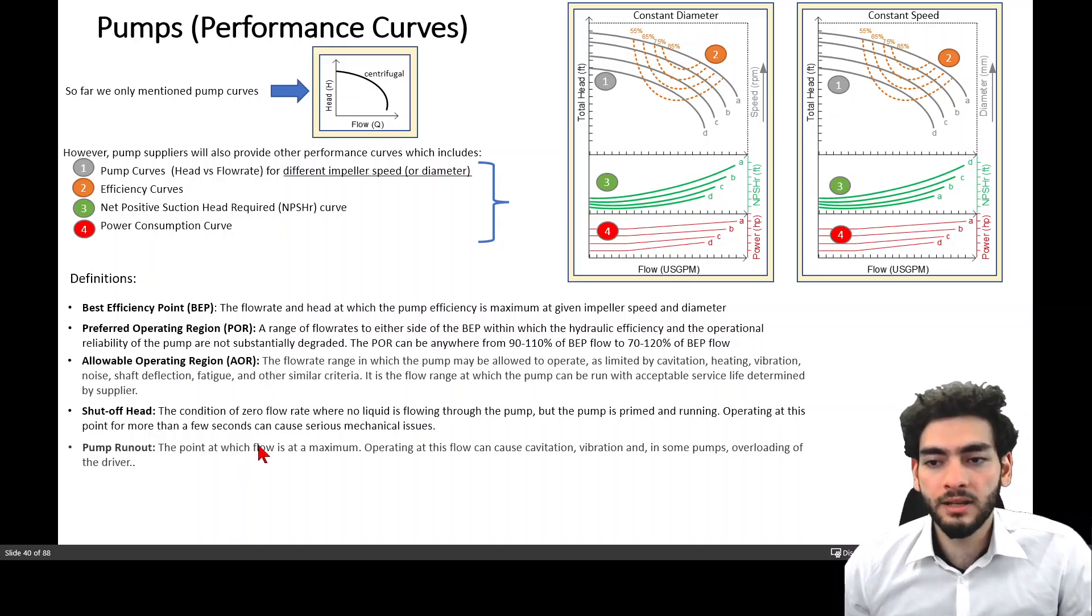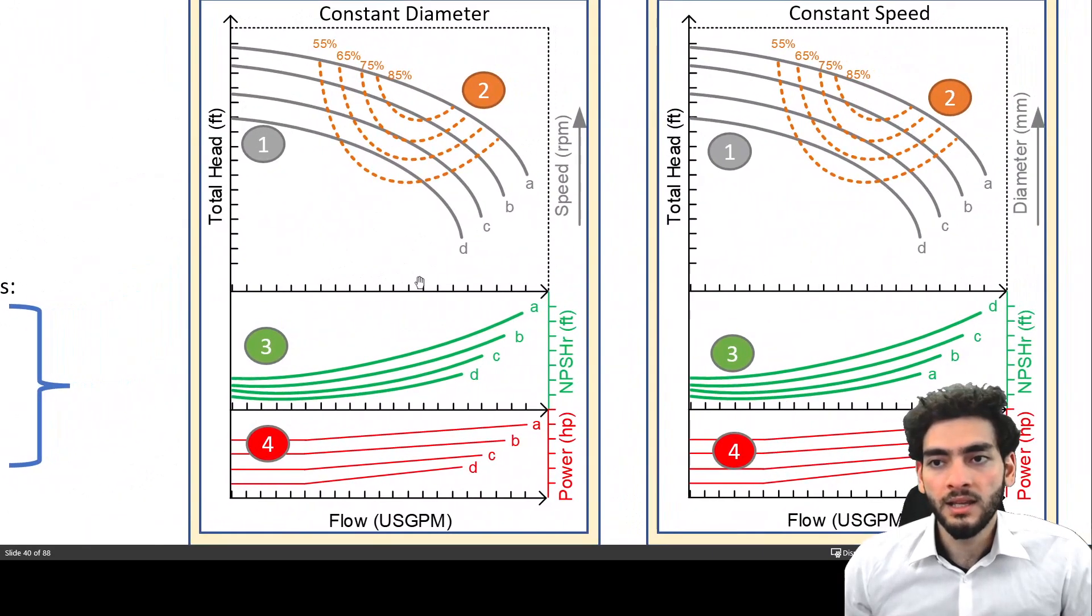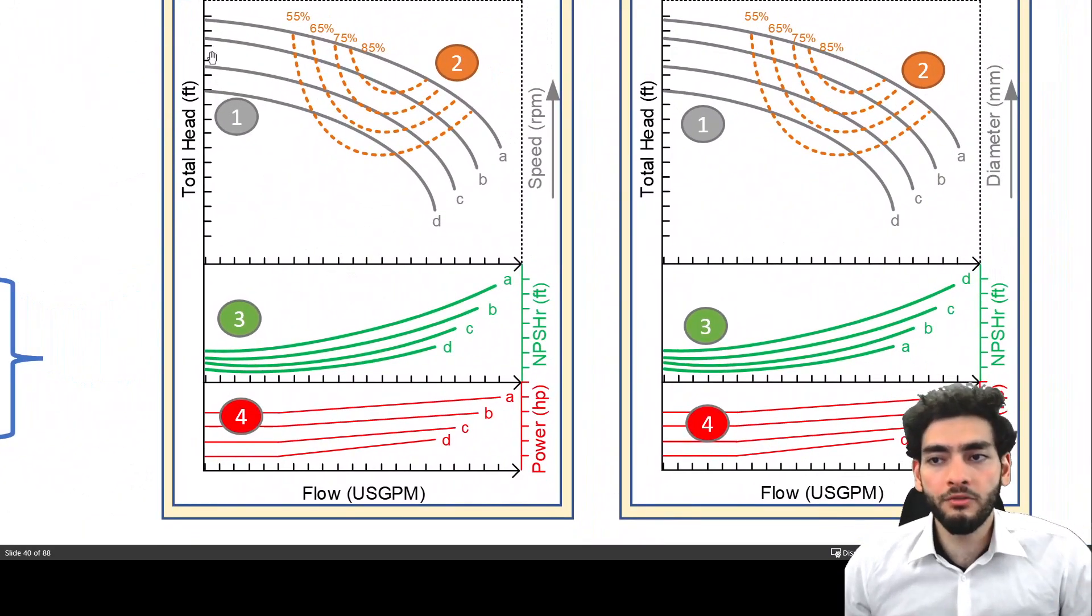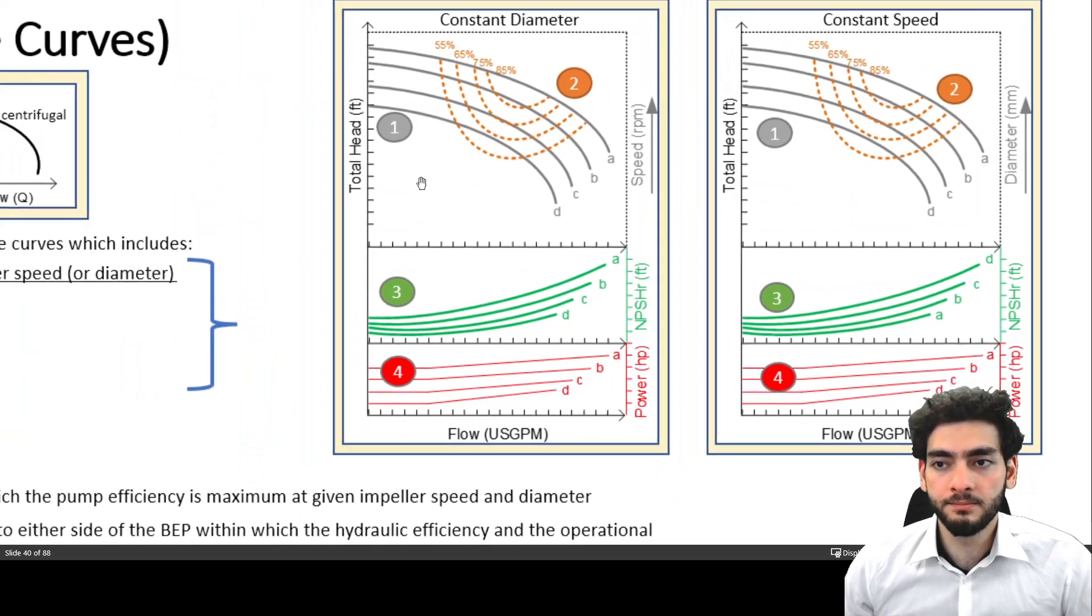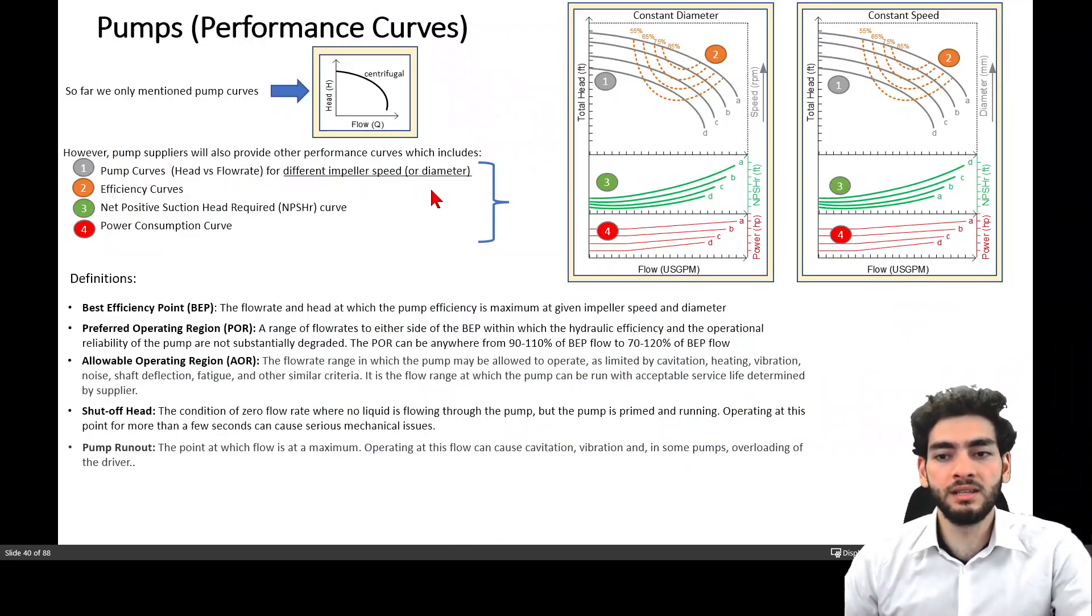Pump runout is the point at which the flow is at maximum. Operating at this flow can cause cavitation, vibration and in some pumps overloading of the driver. So as opposed to the shut off head, the pump runout is when you run very close to this dipping point of the pump and this is also beyond the allowable operating range of the pump and you should not be running at that point because you can cause serious damages to your pump.